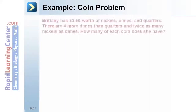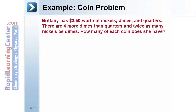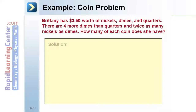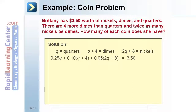Coin problem: Brittany has $3.50 worth of nickels, dimes, and quarters. There are 4 more dimes than quarters and twice as many nickels as dimes. How many of each coin does she have? Solution: let q equal the number of quarters. It follows that q plus 4 equals dimes and 2q plus 8 equals nickels. Set up an equation: 0.25q plus 0.10 times (q plus 4) plus 0.05 times (2q plus 8) equals 3.50.